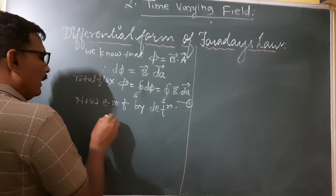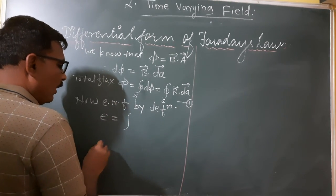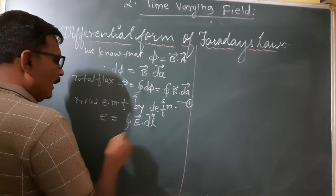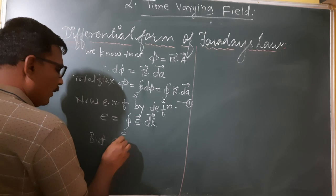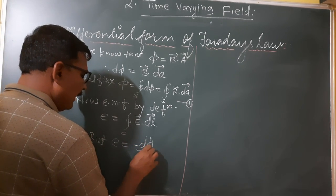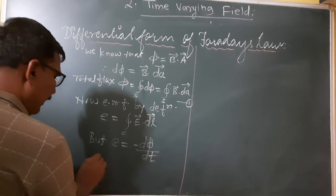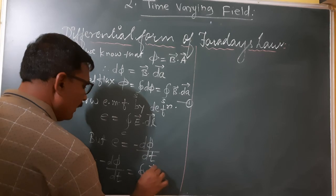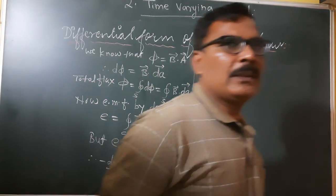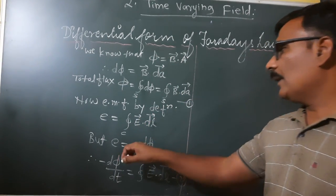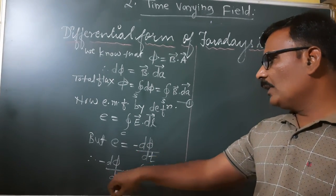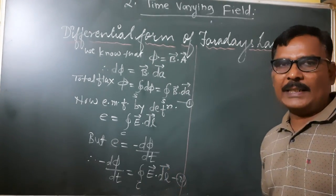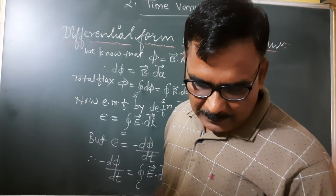By definition, EMF E equals the line integration over a closed loop C of E-bar dot dL-bar. And we know from Faraday's second law that E equals minus d-phi by dt. Therefore, minus d-phi by dt equals the line integration of E-bar dot dL-bar over a closed surface. This is equation two.